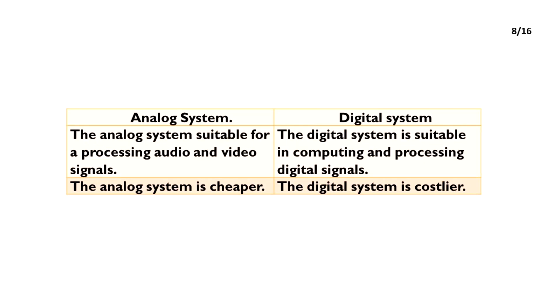The analog system is suitable for processing audio and video signals. The digital system is suitable for computing and processing digital signals. The analog system is cheaper. The digital system is costlier.